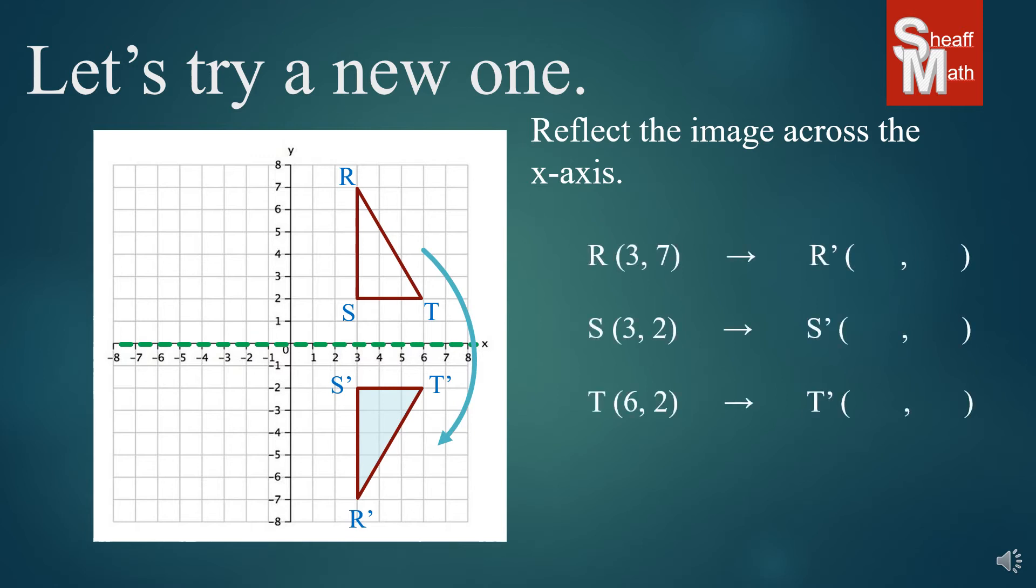Now if we were looking at their individual points, the new prime points are three negative seven, three negative two, and six negative two. And there's always some cool patterns when you're dealing with reflections. And so if you look at the x's, they actually don't change. The x value does not change when you reflect across the x-axis. The y's on the other hand, they turn opposite when you do it. And it's only for the x-axis.